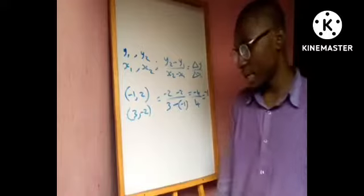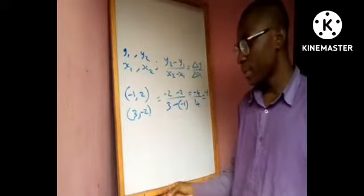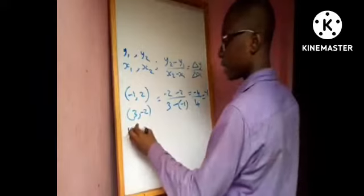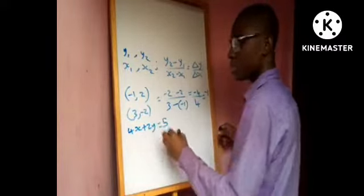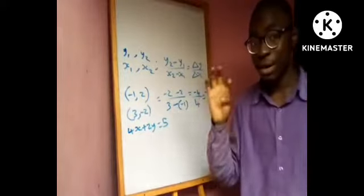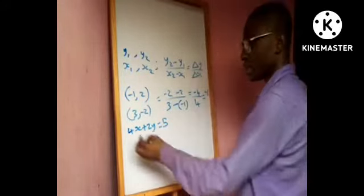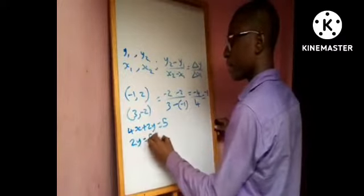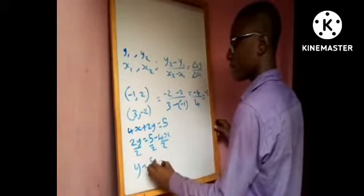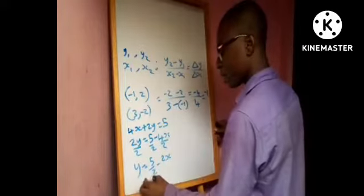Next, find and draw the graph of the line represented by 4x + 2y = 5 and find the gradient by taking measurements. To find the gradient without drawing a graph, rearrange to make y the subject. Subtract 4x from both sides to get 2y = 5 − 4x. Divide both sides by 2, giving y = 5/2 − 2x. Compare this with y = mx + c.